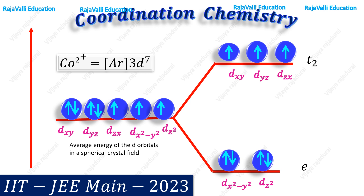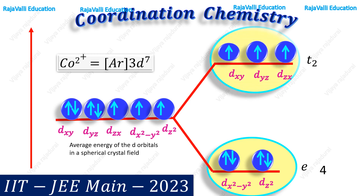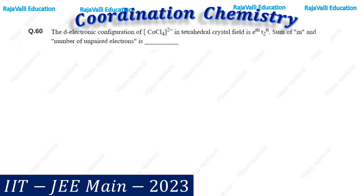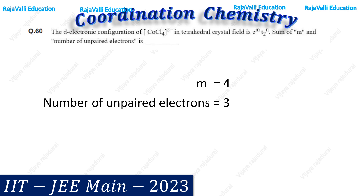Now we come to the solution. The value of M in E^M: in the E state, the number of electrons is 4, so M = 4. The number of unpaired electrons in this complex is 3. Therefore, the d-electronic configuration of this complex in tetrahedral crystal field is E^M T2^N, and the sum of M and the number of unpaired electrons = 4 + 3 = 7. So the answer is 7.